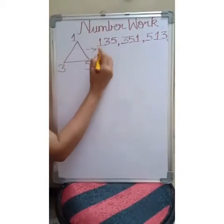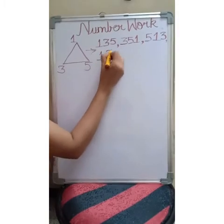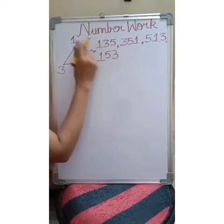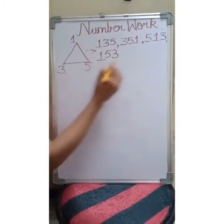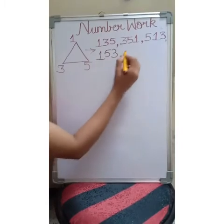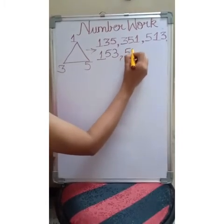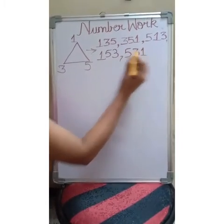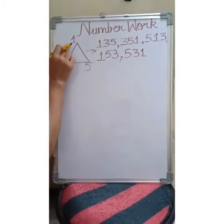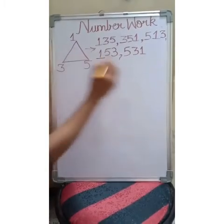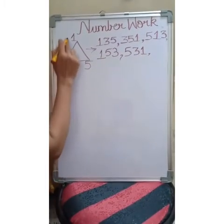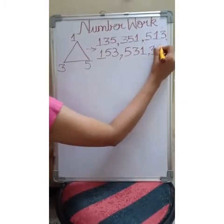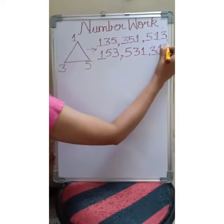Then one, five, three — one hundred and fifty three. Then five, three, one — five hundred and thirty one. And three, one, five — three hundred and fifteen.